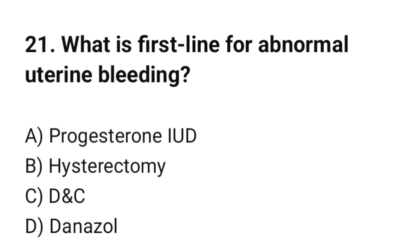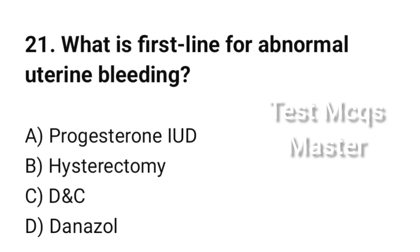Question number 21. What is the first-line treatment for abnormal uterine bleeding? The correct option is A: Progesterone IUD.